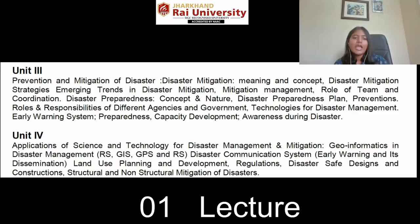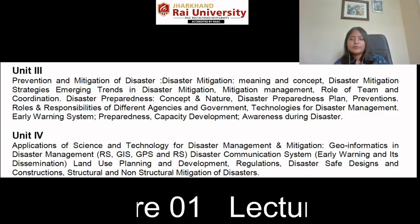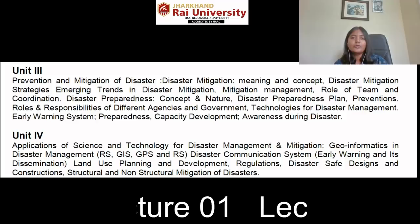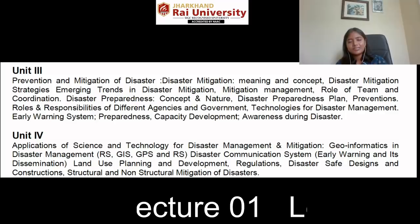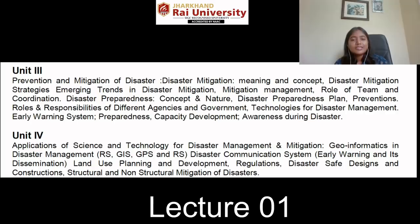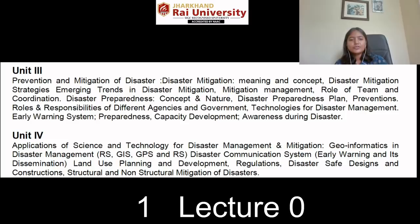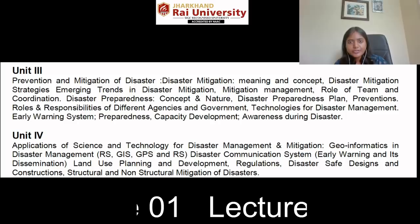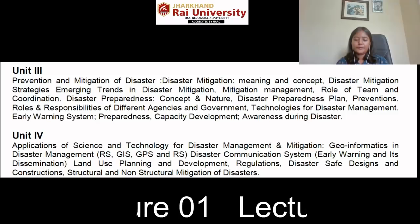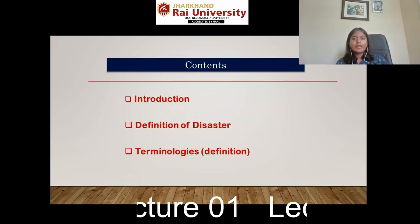In Unit Four, we cover the application of science and technology. There are new technologies used to predict some disasters. For example, we can now predict some natural disasters like cyclones. However, there are natural disasters we cannot predict, like earthquakes. By using science and technology we can predict a few natural disasters, and we will discuss all of these in Unit Four.